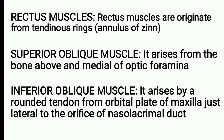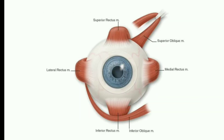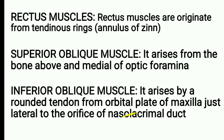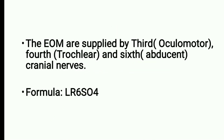The superior oblique muscle arises from the bone above and medial to the optic foramen. The inferior oblique muscle arises by a short tendon from the orbital plate of the maxilla, just lateral to the nasolacrimal duct, as shown in this diagram.